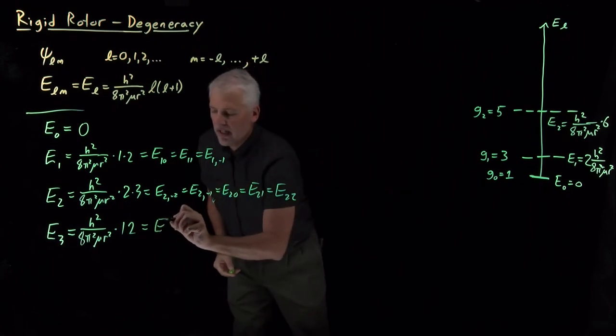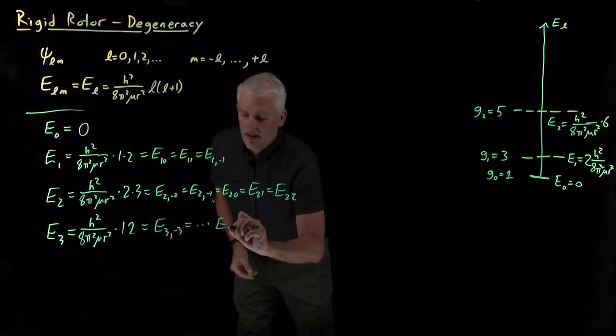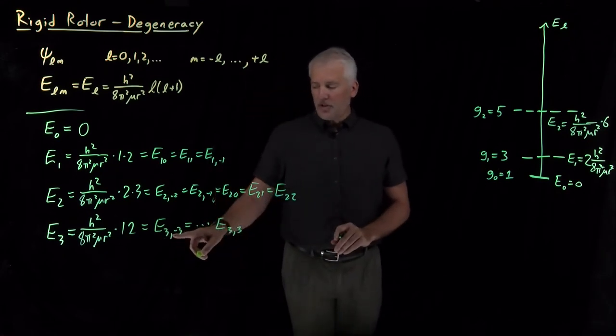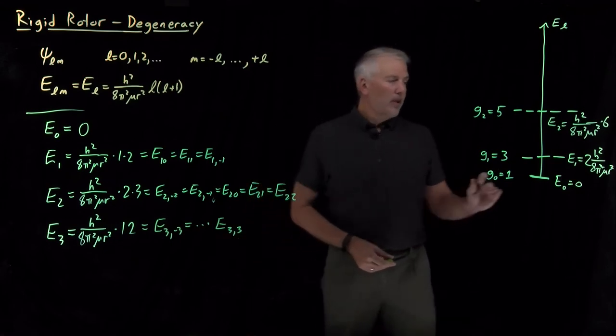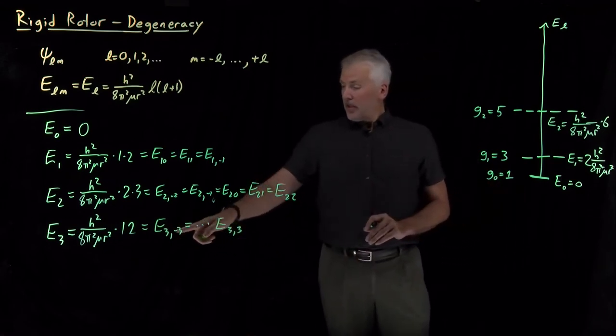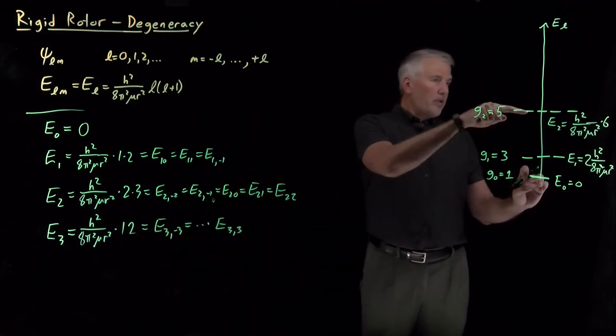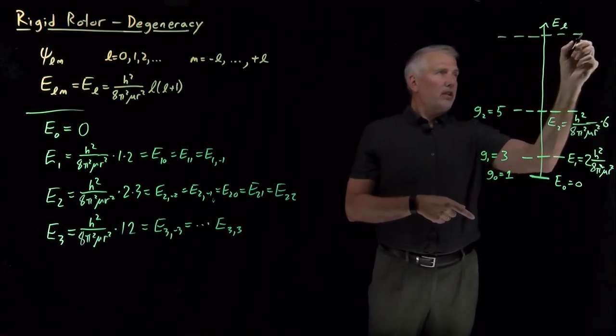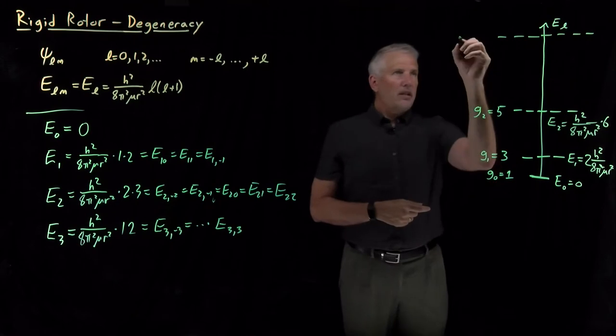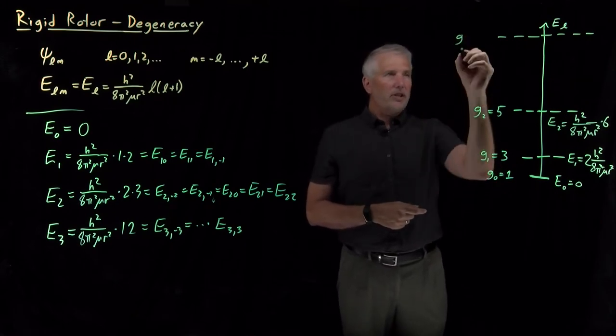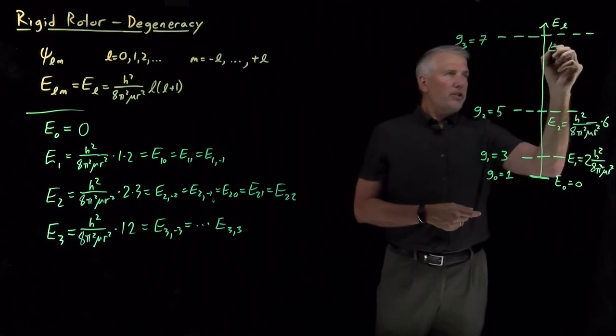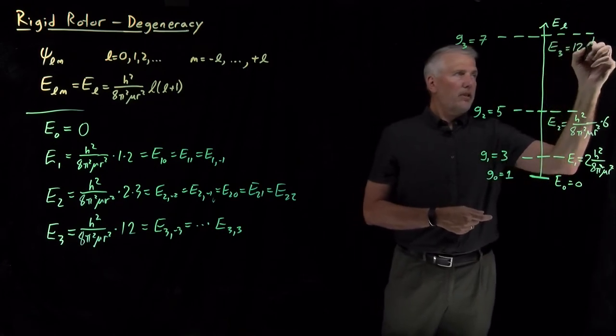So, there's anywhere from E₃,₋₃, all the way up to E₃,₃. There's seven integers from negative 3 up to positive 3. So, at twelve times our collection of constants, so about twice as high as that one, so somewhere up here, there's a seven-fold degenerate state, a seven-fold degenerate energy level. The degeneracy of the L equals 3 level is seven. Energy is twelve times these constants.